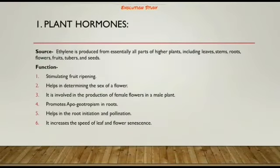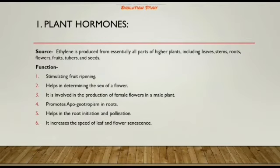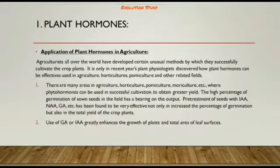Ethylene is produced from essentially all parts of higher plants including leaves, stems, roots, flowers, fruits, tubers, and seeds. Its functions include stimulating fruit ripening and helping determine the sex of a flower — it is involved in the production of female flowers in a male plant. It also promotes root initiation, pollination, and increases the speed of leaf and flower senescence.